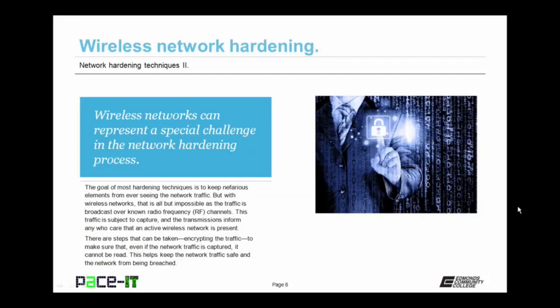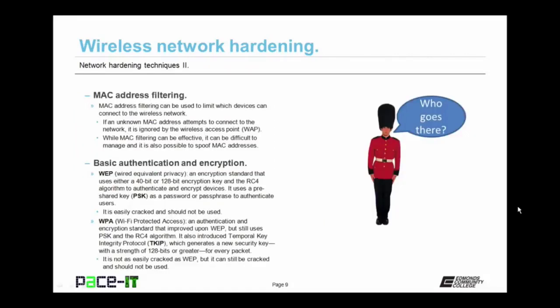One of the first techniques you can use to harden a wireless network is MAC address filtering. MAC address filtering can be used to limit which devices can connect to the wireless network. If an unknown MAC address attempts to connect to the network, it is ignored by the wireless access point — when it requests to join, the WAP checks its MAC filter, and if that MAC isn't in the filter, it just drops that requester. While MAC filtering can be effective, it can also be difficult to manage, and it is also possible to spoof MAC addresses.